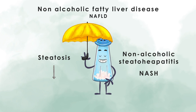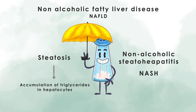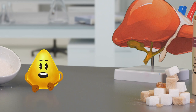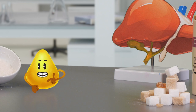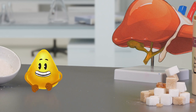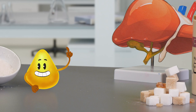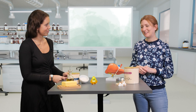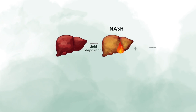Steatosis is defined by the accumulation of fat or triglycerides in hepatocytes. Even though adipocytes are my preferred home, they sometimes get quite tight and sticky — that's when I go on the run to find a secondary residence. The liver is a good shelter where I can stay as long as I want. Unfortunately, you don't belong there. The buildup of fat in the liver causes liver inflammation and cellular damage, which leads to NASH.